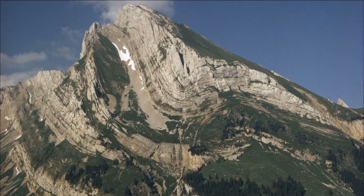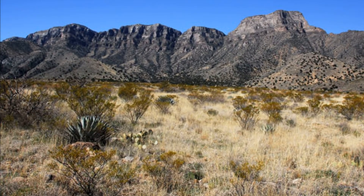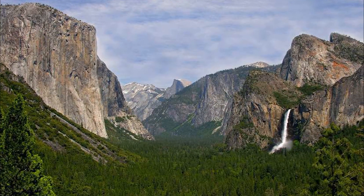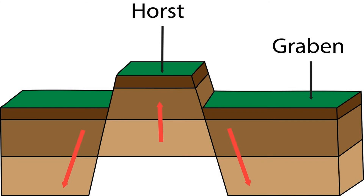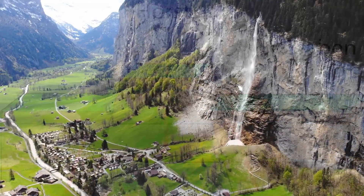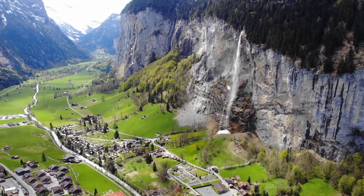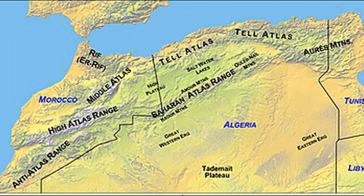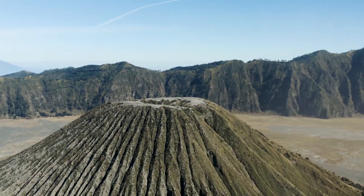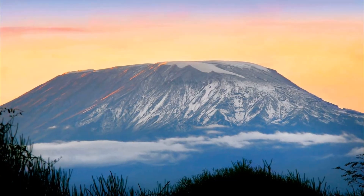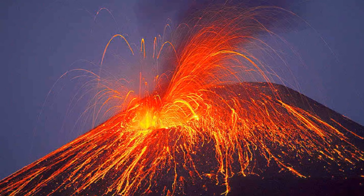They are very old fold mountains. Block mountains are created when large areas are broken and displaced vertically. The uplifted blocks are termed as horst and the lowered blocks are called graben. The Rhine Valley and the Vosges Mountain in Europe are examples of such mountain systems. Volcanic Mountains are formed due to volcanic activity. Mount Kilimanjaro in Africa and Mount Fujiyama in Japan are examples of such mountains.